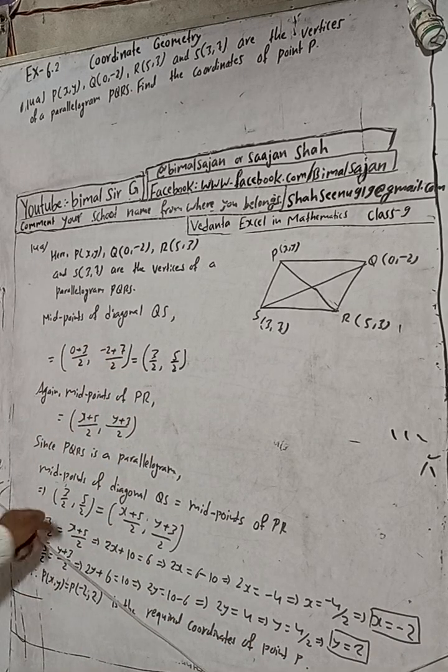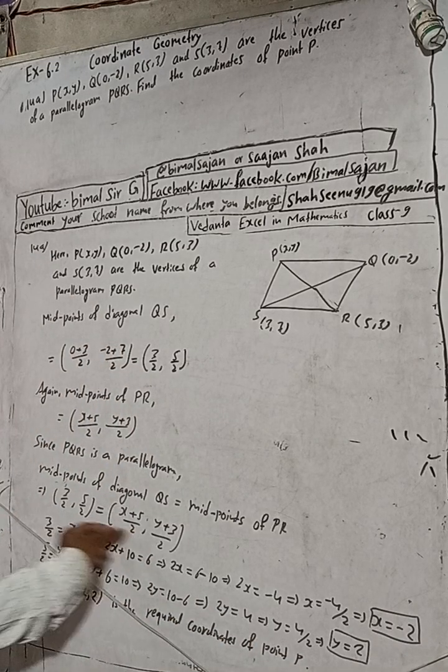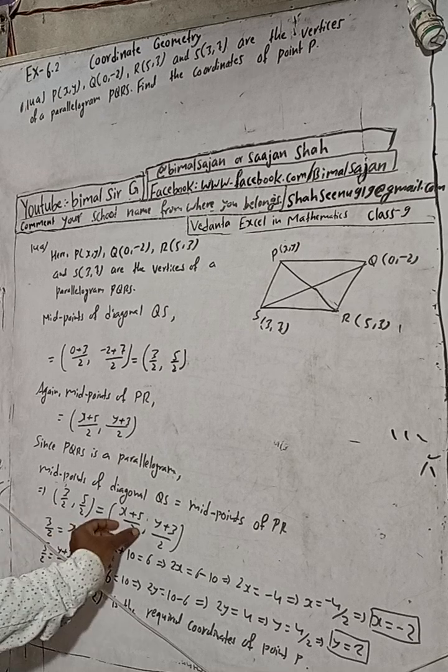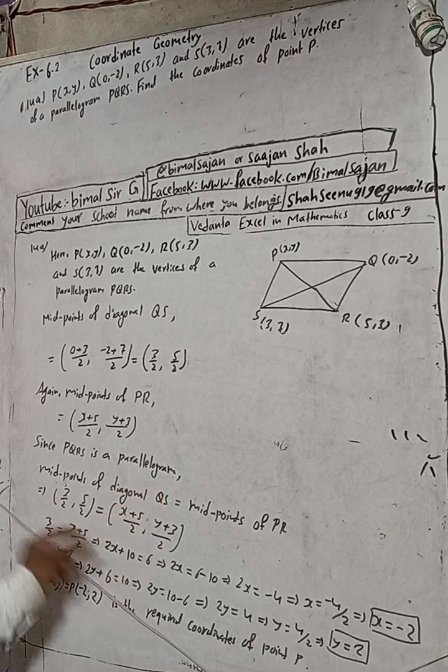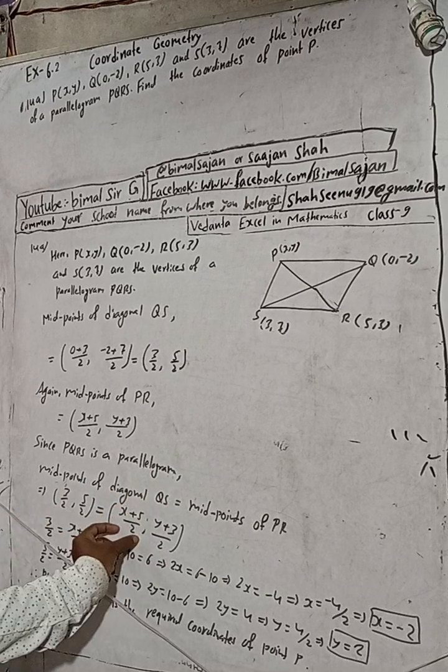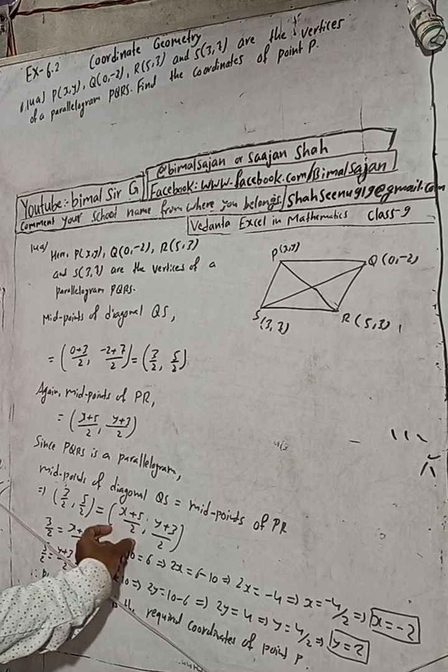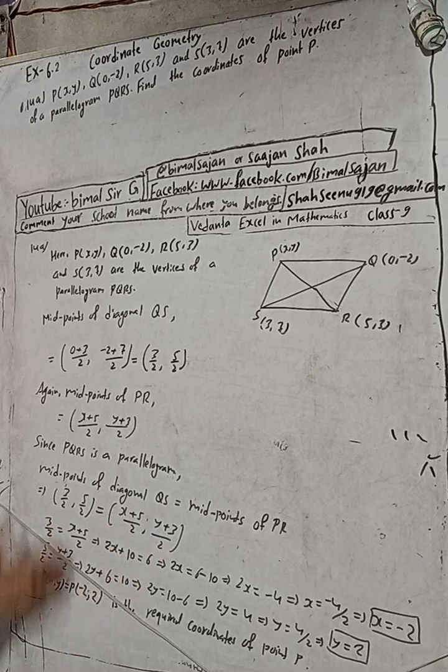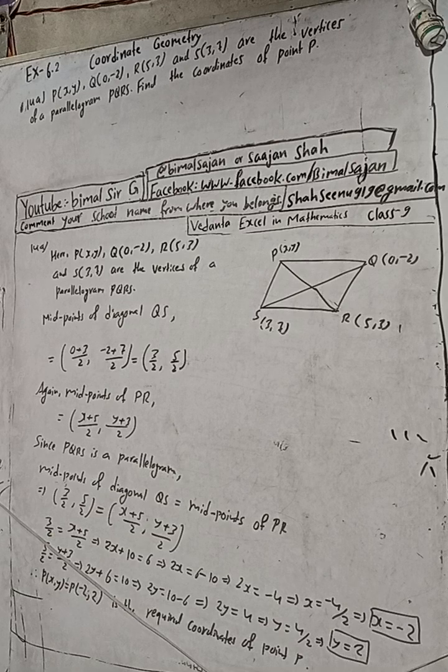Here we have equated these coordinates because this is the x-coordinate and this is the x-coordinate - both are midpoints, so this must be equal to this. The x-coordinate must equal the x-coordinate, and the y-coordinate must equal the y-coordinate. We have just equated that part. So this is the solution.